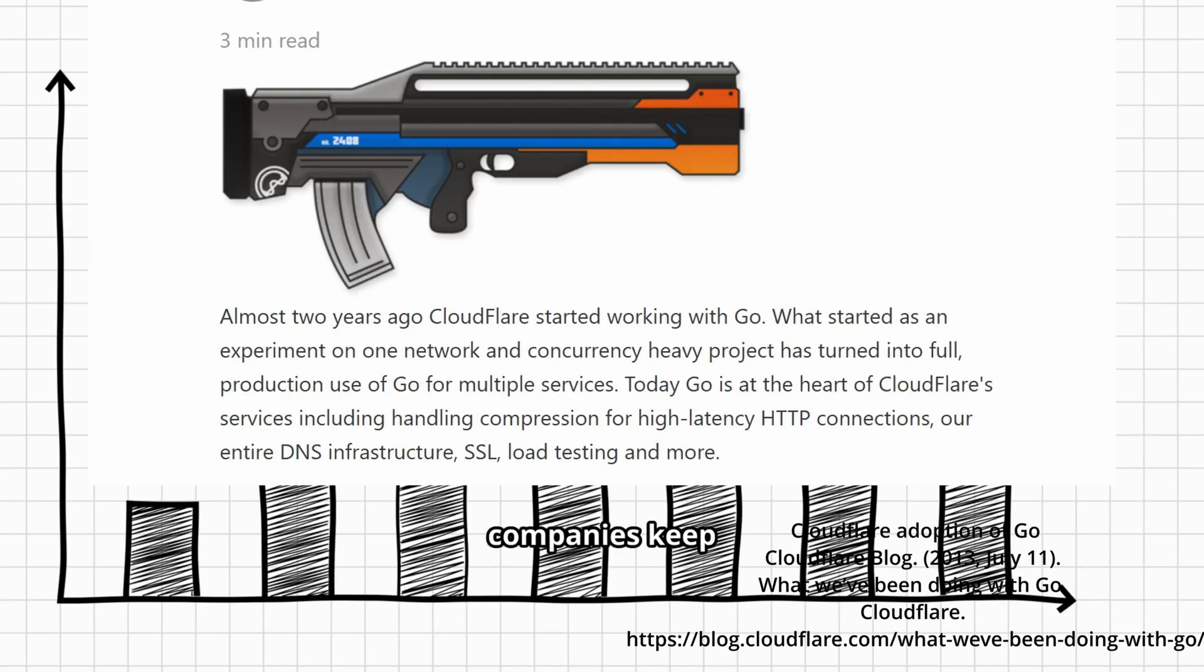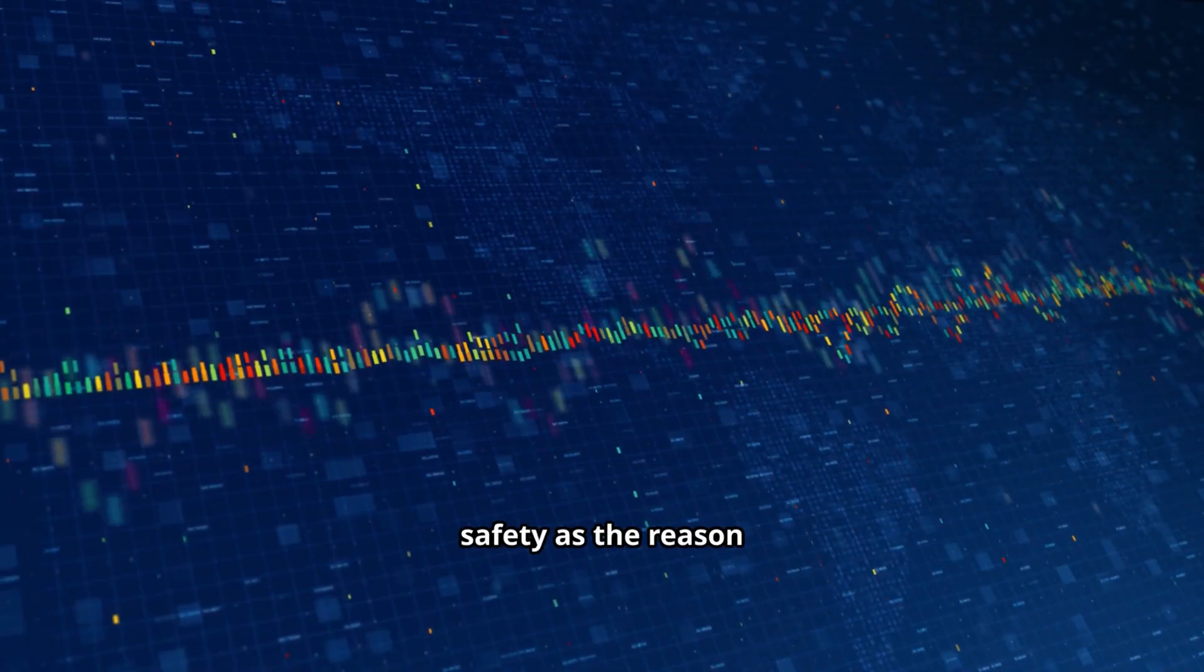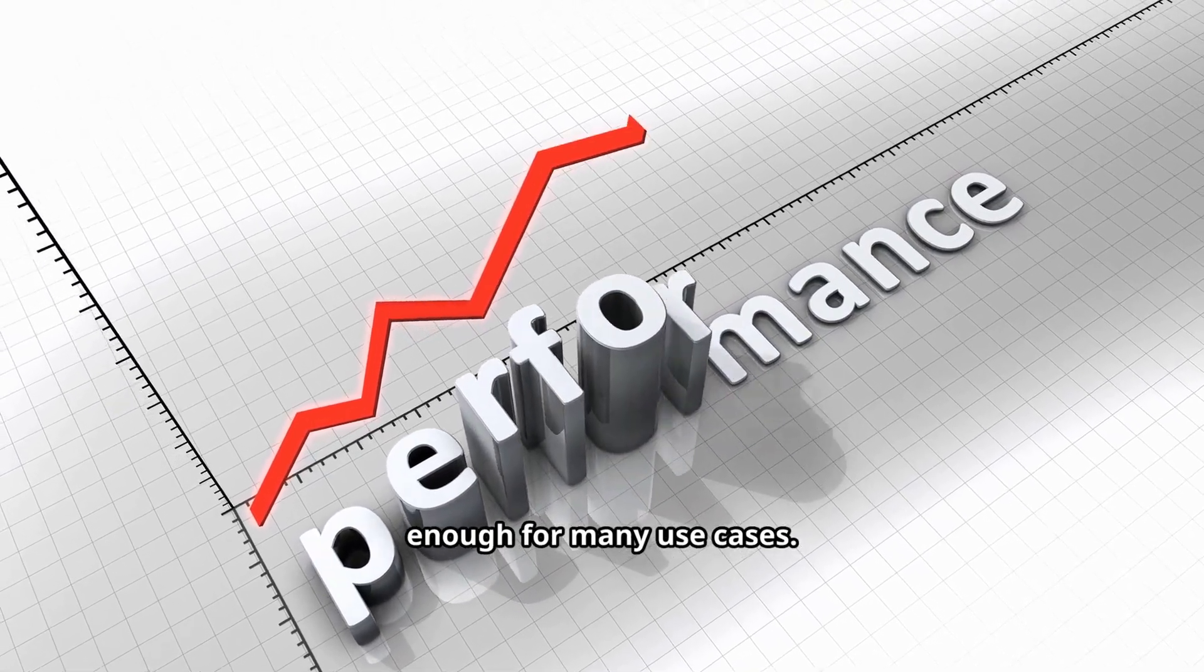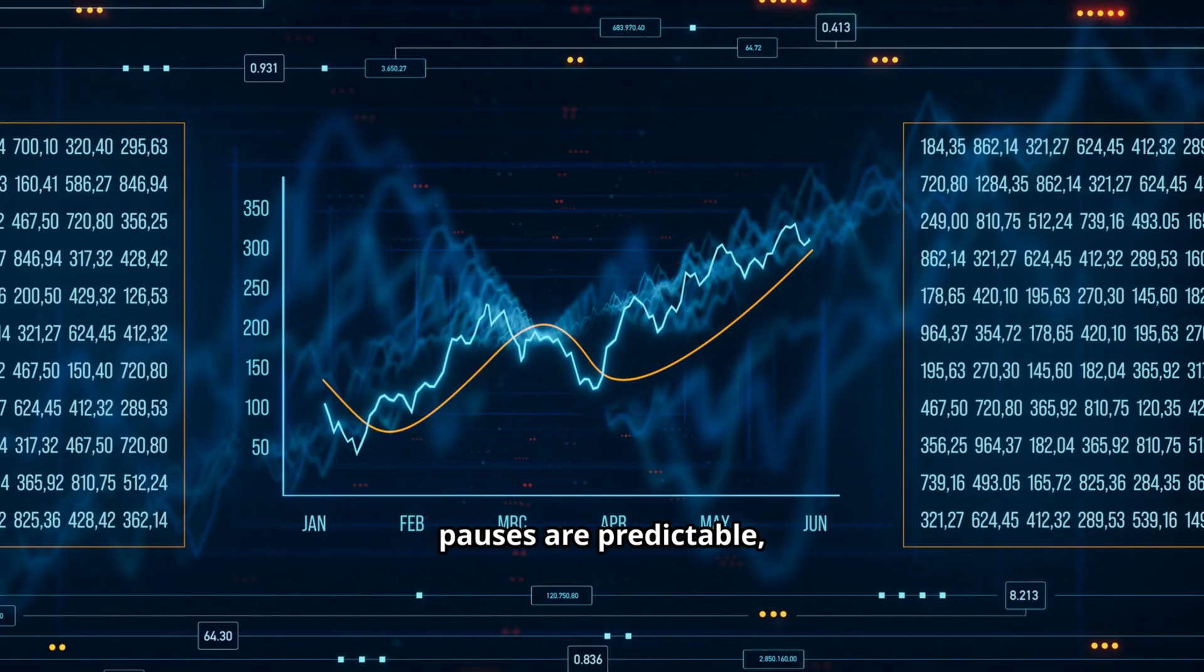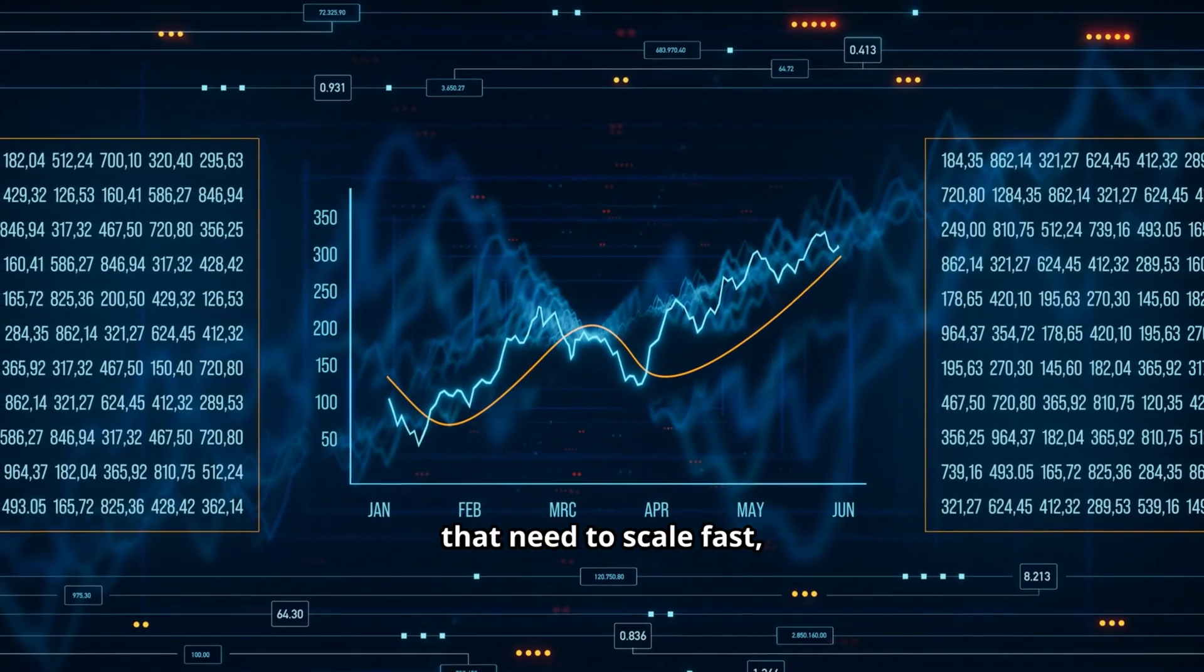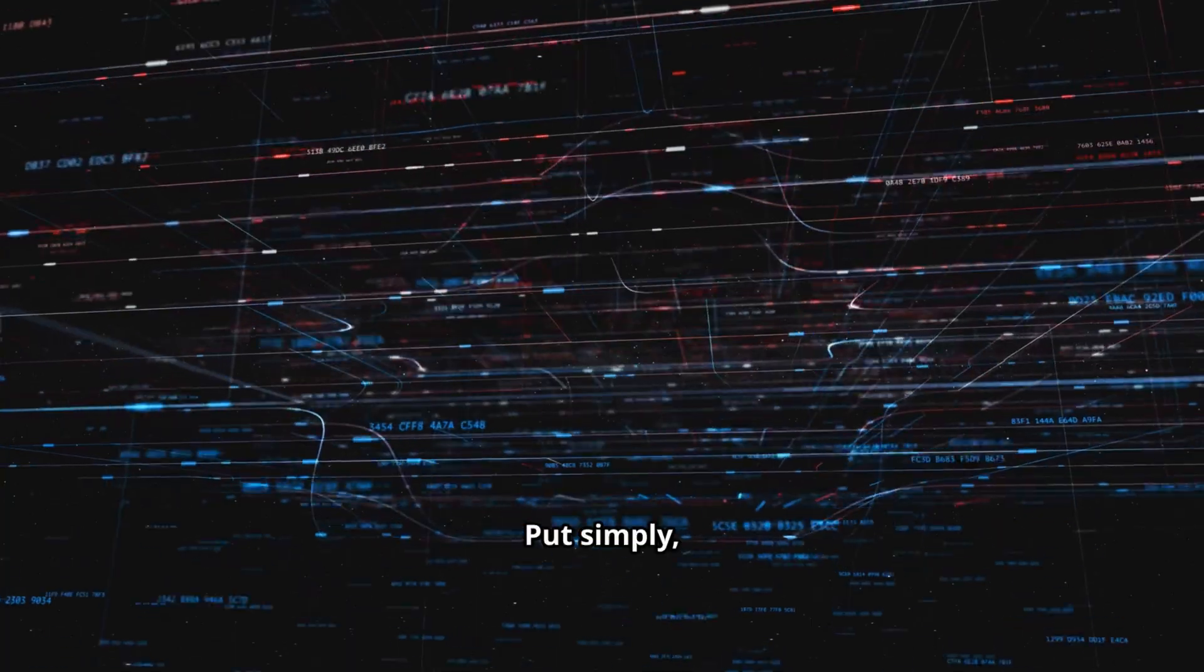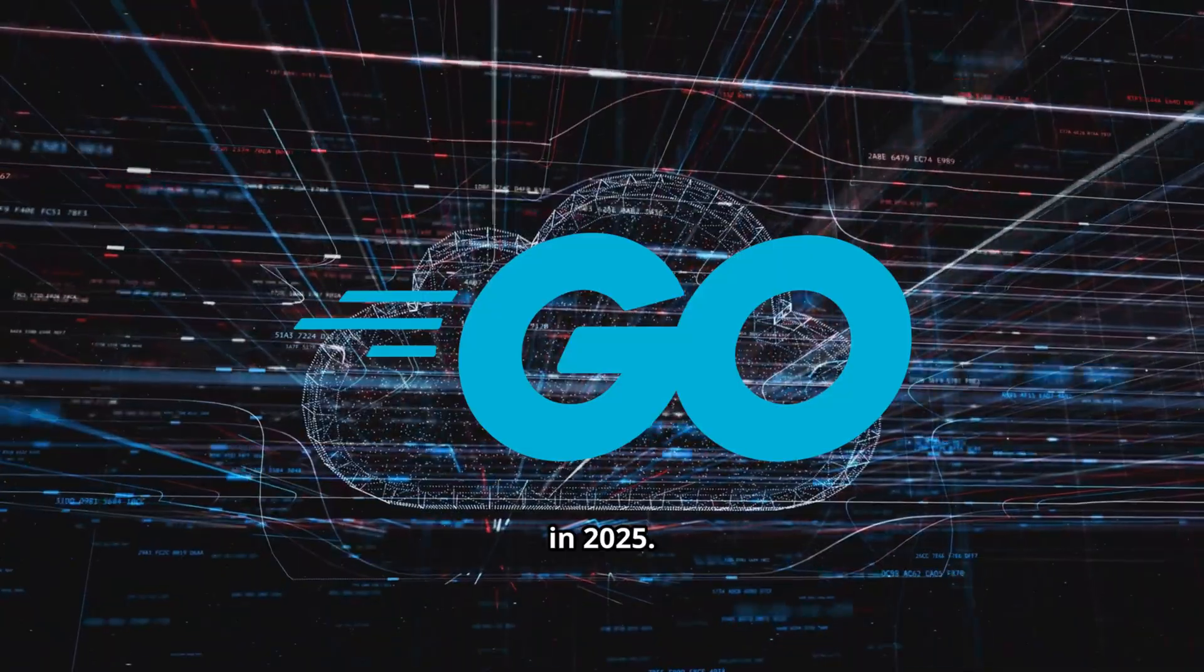And while Rust fans often tout memory safety as the reason their language should dominate, in practice, Go has proved good enough for many use cases. Its garbage collector has matured to the point where latency is low, pauses are predictable, and throughput remains high. For building cloud-native systems that need to scale fast, predictability is often more valuable than perfection. Put simply, Go remains the most pragmatic tool for cloud infrastructure in 2025.